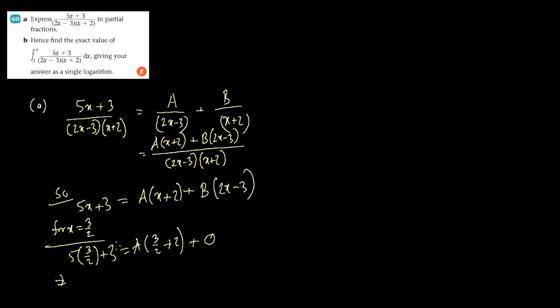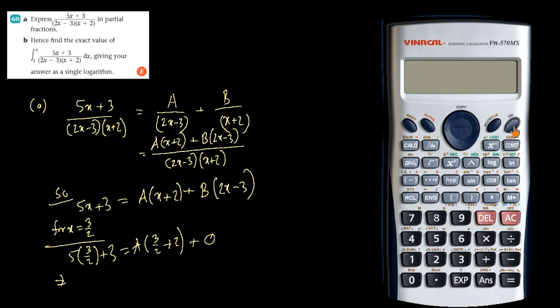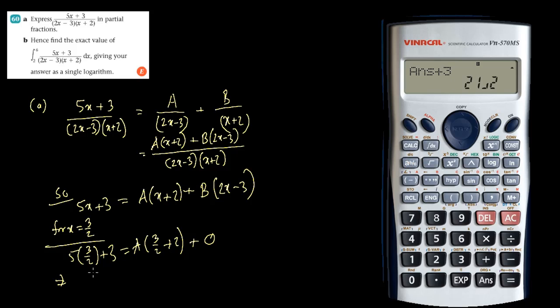So 5 times 3 is 15. 15/2 plus 3 would be 21/2. So this is 21/2 equals to... Now 3/2 plus 2 is going to be 4, 4 plus 3 is 7. 7/2 is A.